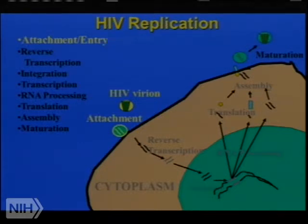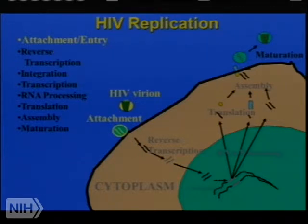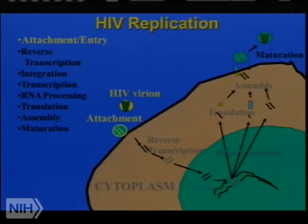Now let's go through the replication cycle of the virus, because knowing and elucidating these steps allowed the development of over twenty antiretroviral drugs. I'll highlight the steps that are either fascinating or give us a really good drug. Somebody once told me you could do all virus replication by drawing a circle and an arrow through it — the circle is the cell and the arrow is the virus. But knowing the details gives you specific events that can be used as targets to stop replication.